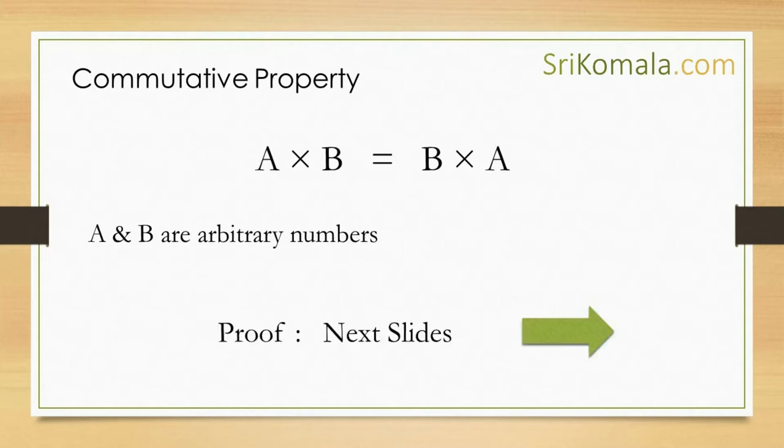As far as the conclusion is concerned, the answer is yes. The commutative property could be observed in arbitrary numbers. In other words, A times B is equal to B times A.